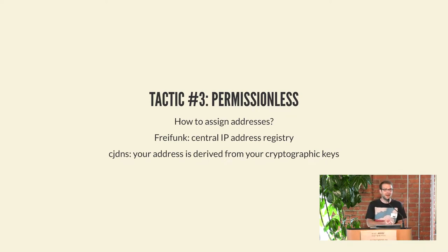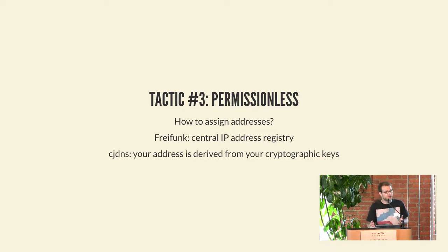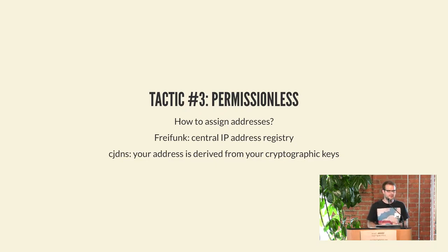Another tactic is permissionlessness: what steps, permissions, or forms are needed to actually participate in this network? Usually that comes down to IP addresses. In Freifunk there's a web form you fill out — just a bunch of contact data. It's not very hard, but there is a central system where you need to apply and get credentials to enter the network. That's not necessary — it's purely a function of what the protocols used in this network require. CGDNS encrypts all traffic anyway, so you have cryptographic keys already, so why not use these as your address? It also makes it a lot easier to configure — you just run one command to generate that stuff and that's all.